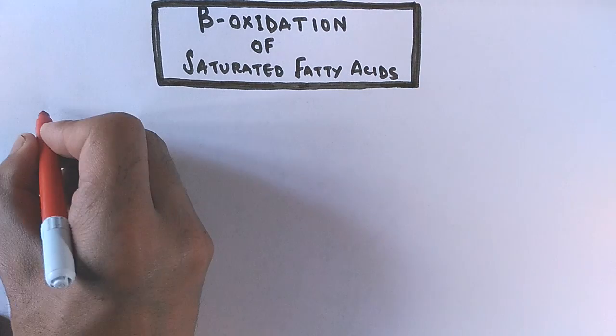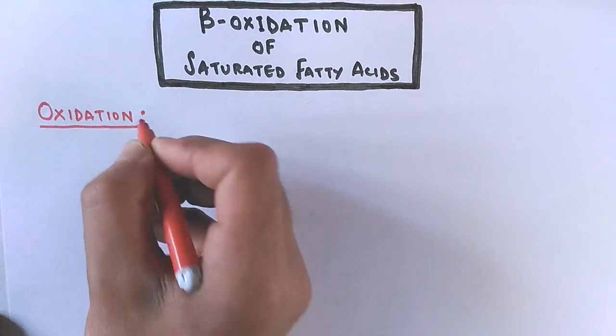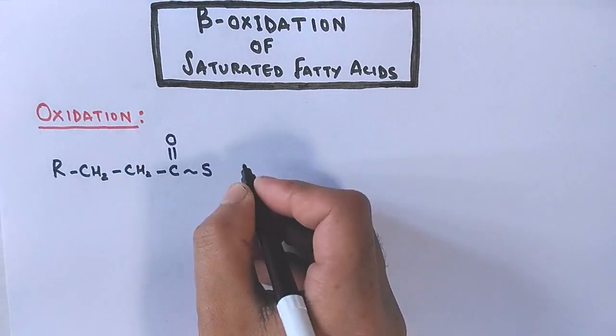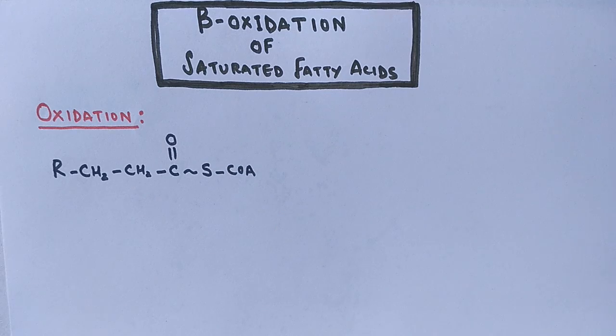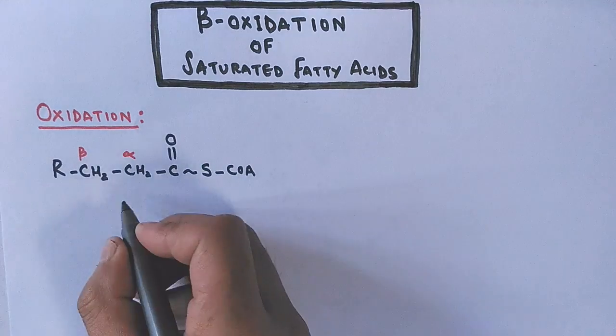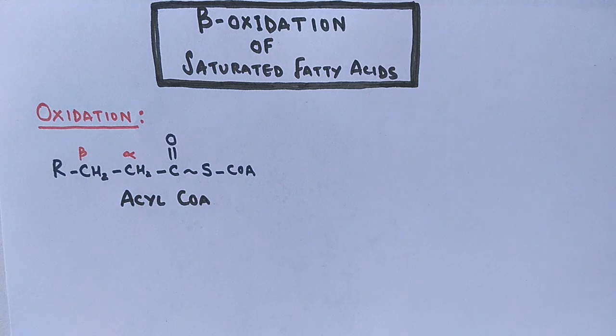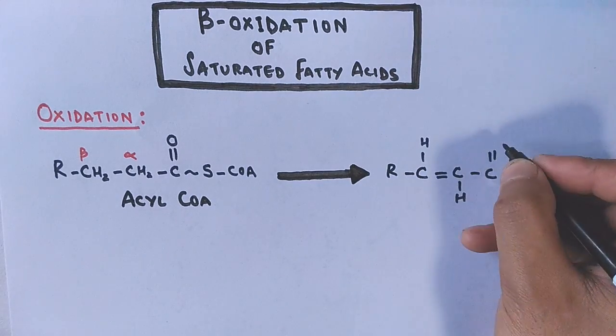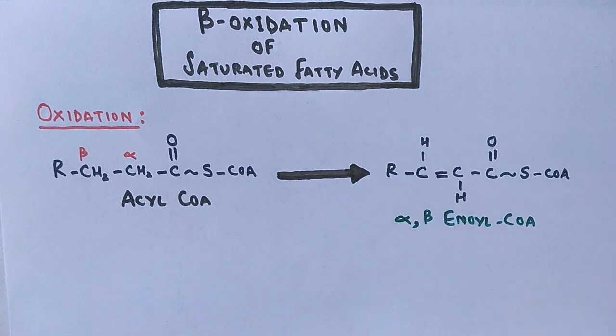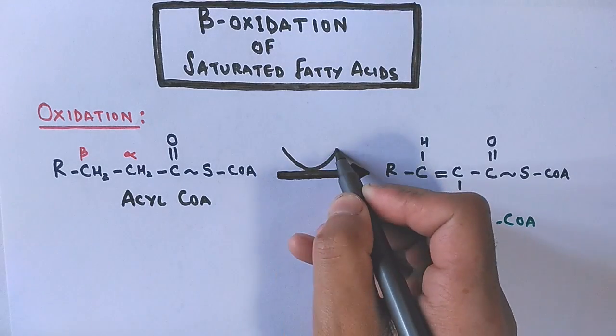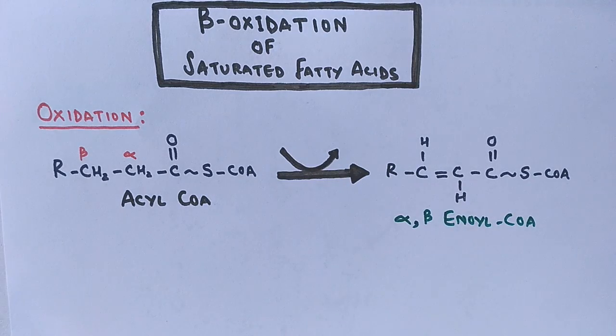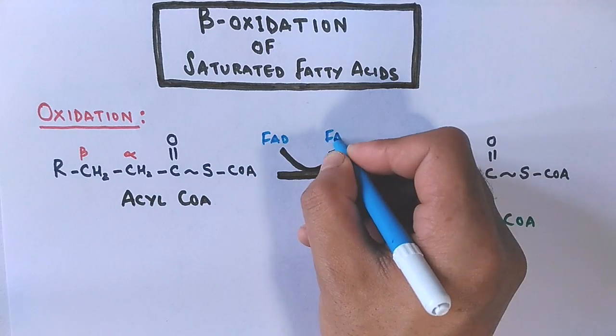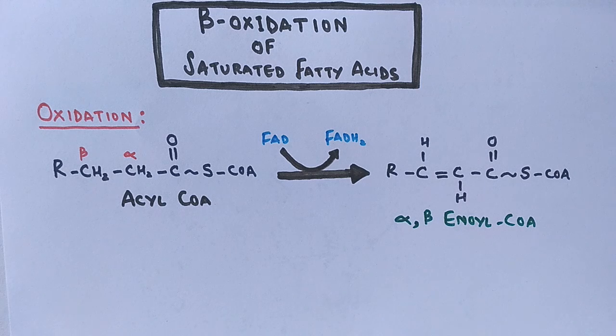The first reaction that occurs in beta-oxidation is oxidation. We start with the acyl-CoA molecule present in the mitochondrial matrix. It has both alpha and beta carbons present in its chain. Oxidation occurs, and we get a molecule called alpha-beta enoyl-CoA, which has lost the two hydrogens at the alpha and beta positions. The lost hydrogens are accepted by the oxidizing agent FAD in the form of FADH2. This oxidation reaction is catalyzed by the enzyme acyl-CoA dehydrogenase.